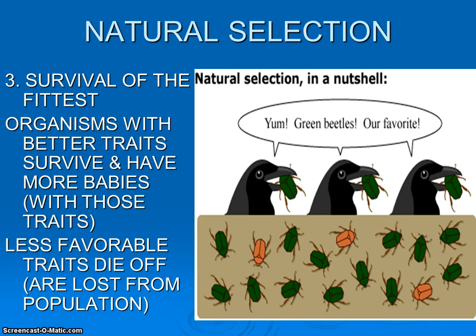Over time, that population of beetles would change. These are very small changes, but if we eventually lose that green gene from the gene pool, there are no more green beetles. We've seen that population change, which in essence fits our definition of evolution: change over time.